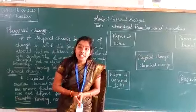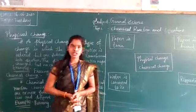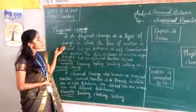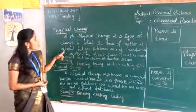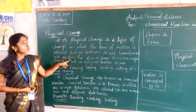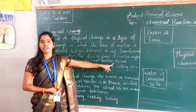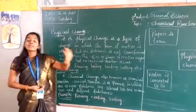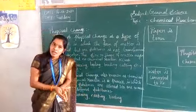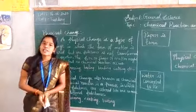To differentiate physical and chemical changes, you must know the basics. A physical change is a type of change in which the form of matter is altered but one substance is not transformed into another. The size or shape of matter may be changed, but no chemical reaction occurs. Only physical appearance changes.